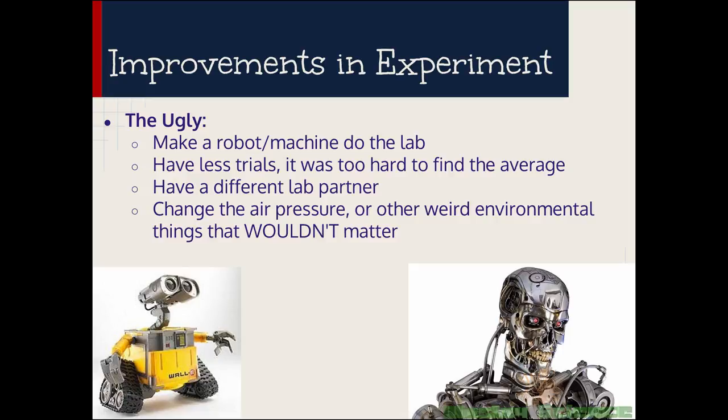And here's the ugly. These are things that I've actually seen before. Make a robot do it. Why would a robot help? You can't just say, make a robot do it. Have less trials because it's really hard to find the average. I've had someone say that. Have a different lab partner. I had somebody rant about their lab partner for a whole paragraph and how they ruined their lab. And then this one I see pretty commonly, change the air pressure or some other weird environmental thing that wouldn't really matter.